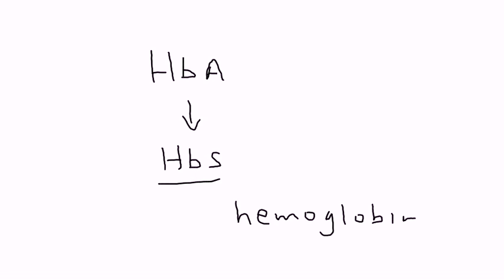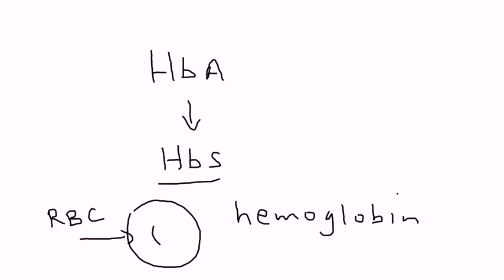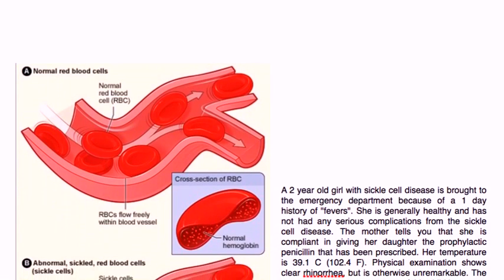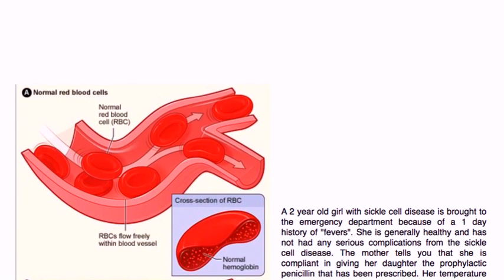Hemoglobin is the molecule that sits inside the red blood cell. The red blood cell, also abbreviated as RBC, is at the heart of this disease, and it's best illustrated with a diagram. Here's a nice diagram of normal-looking red blood cells. You can see they're round and kind of look like a donut. They are able to flow freely through the blood vessels to various parts of the body. This one shows a cross-section where one red blood cell has been cut in half, and inside are the tiny little hemoglobin molecules.